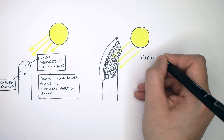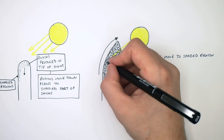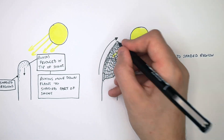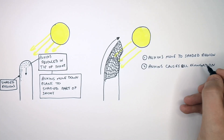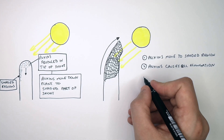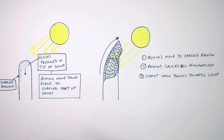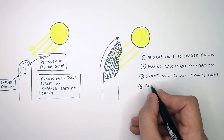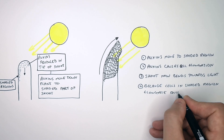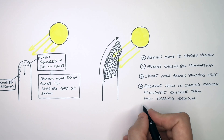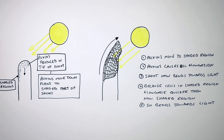In summary: auxins move to the shaded region of the shoot. Auxins cause cell elongation to happen more quickly. The shoot now bends towards the light because cells in the shaded region elongate quicker than the non-shaded region. So the shoot bends towards the light.